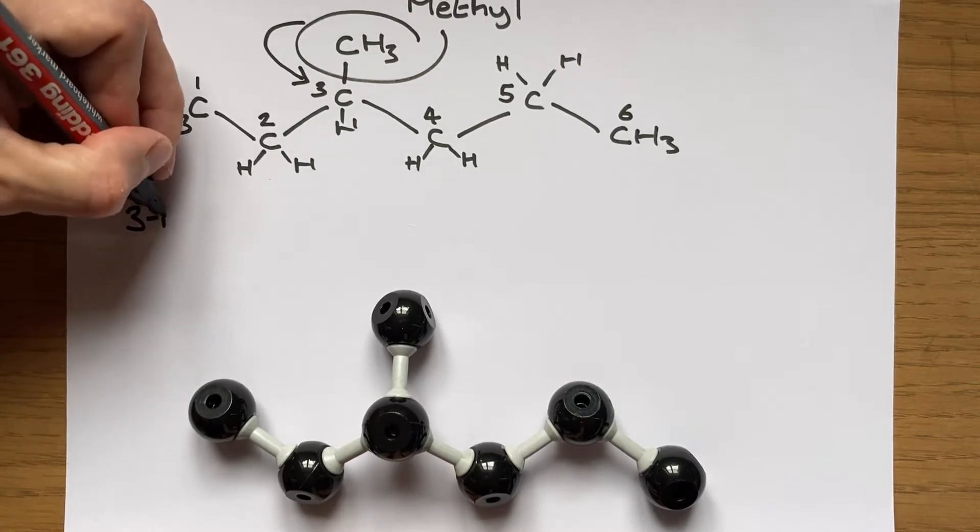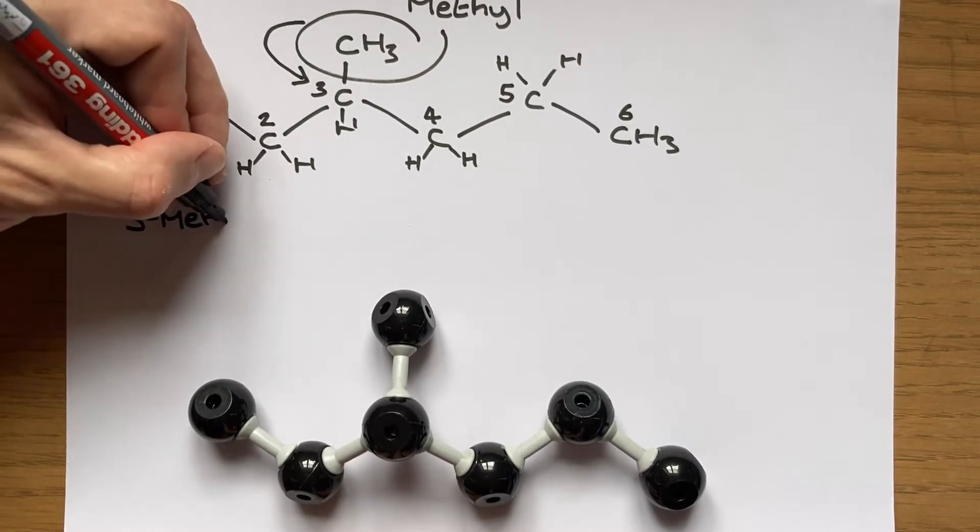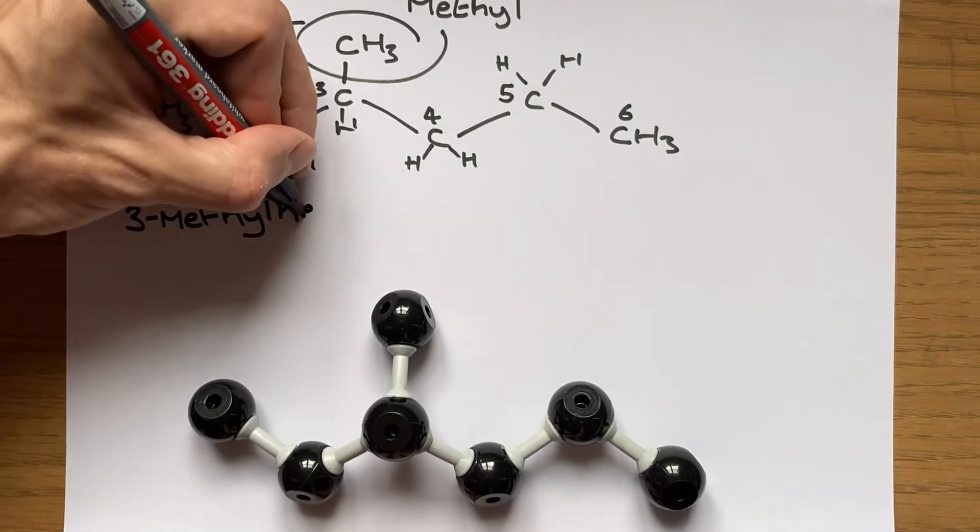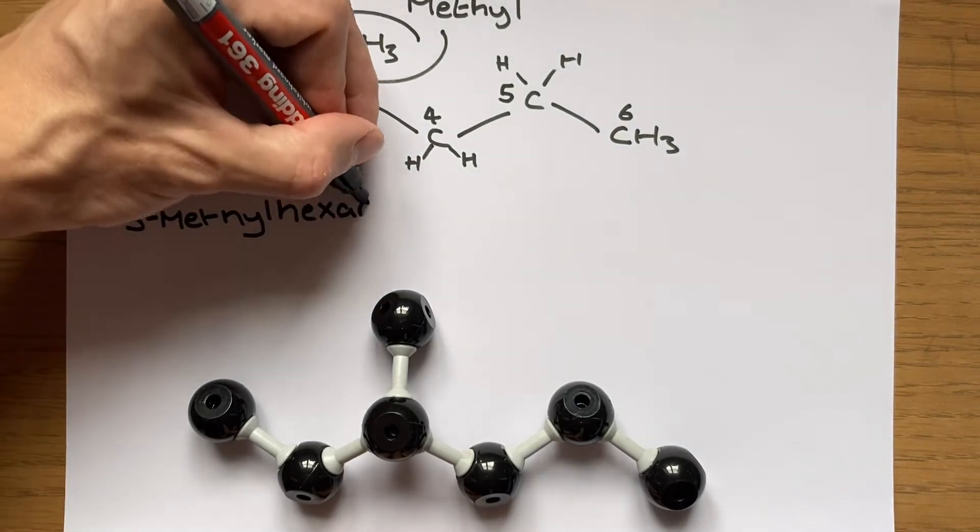Here we can see because I've got a 6 carbon longest continuous chain and the methyl group is on position 3, my molecule is called 3-methylhexane.